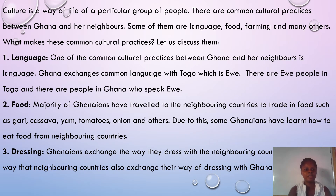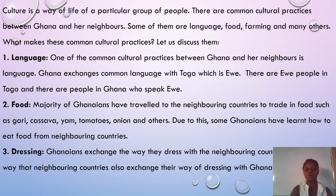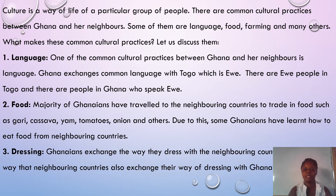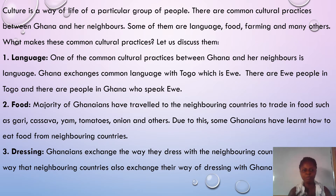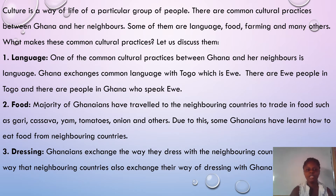The first one we are going to look at is language. One of the common cultural practices between Ghana and her neighbors is language. Ghana exchanges a common language with Togo, which is Ewe. There are Ewe people in Togo and there are also people in Ghana who speak Ewe.